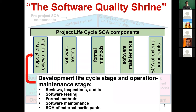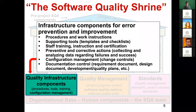The second part is the actual software quality assurance activities. For example, we need to do software testing, reviews, inspections, and also apply other software quality assurance activities in this stage. This is the actual process that we follow to ensure the quality of software systems. We also need some infrastructure support, such as training support, tooling support, and process, procedural and working instruction support.